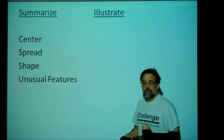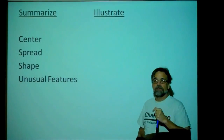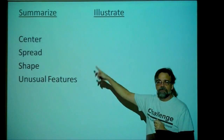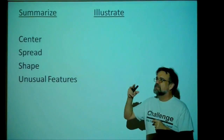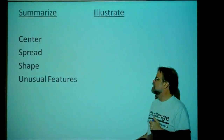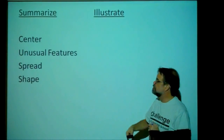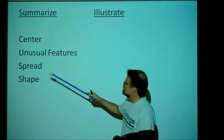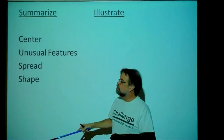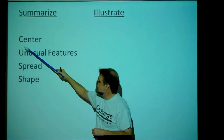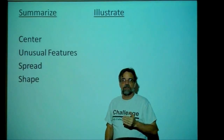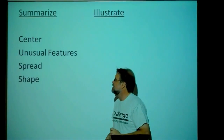Now, a lot of times people forget what they're supposed to check for: center, spread, shape. If you put them in a different order and say center, unusual features, spread, shape, you can remember the mnemonic device C-U-S-S — just think, I need to cuss about this data.